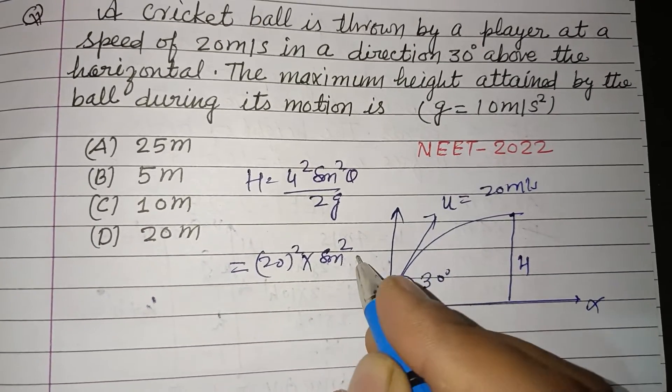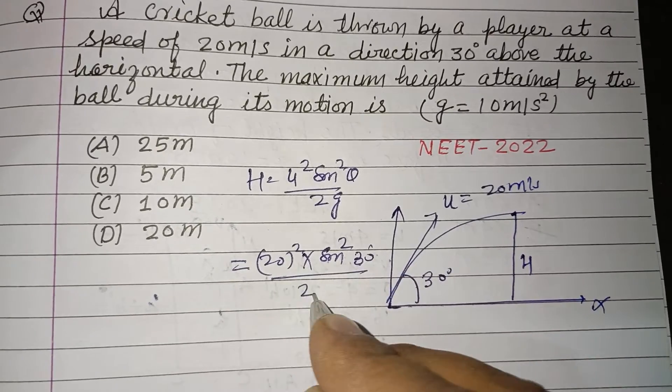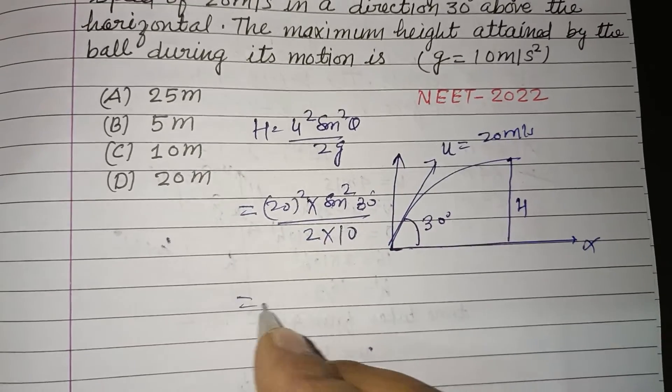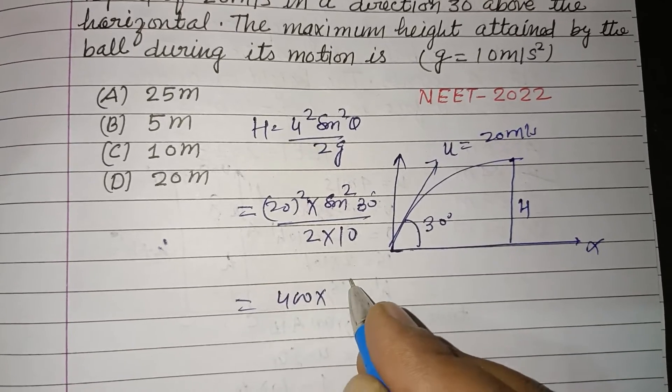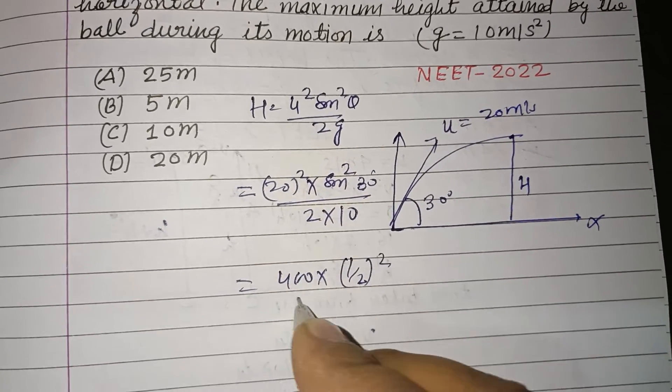Sine squared theta is 30 degrees over 2g. g is 10. So this is 400 into sine 30, whose value is 1 by 2, 1 by 2 squared, into 2 into 10.